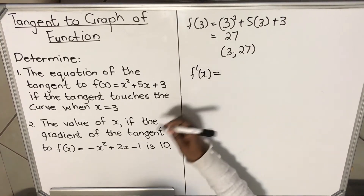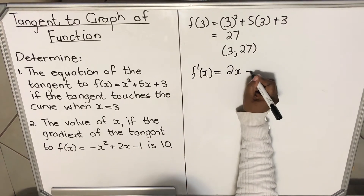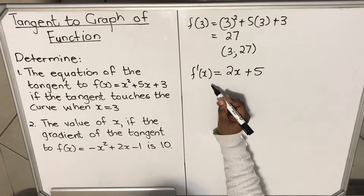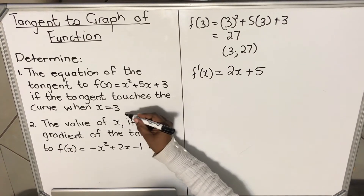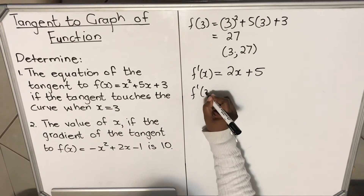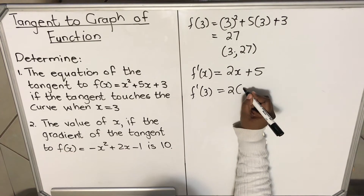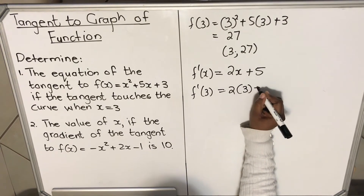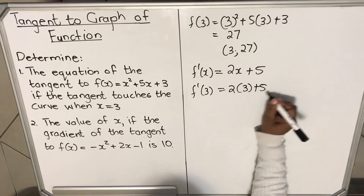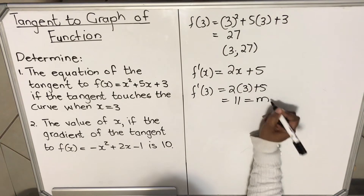You take your function and find the derivative: f'(x) = 2x plus 5. After you find the derivative, you substitute the x value they gave you. So f'(3) equals 2 times 3 plus 5. Two times 3 is 6, plus 5 is 11. This 11 is your gradient.